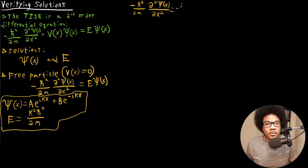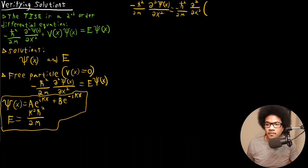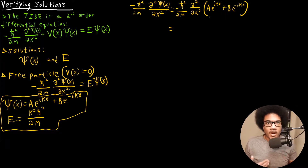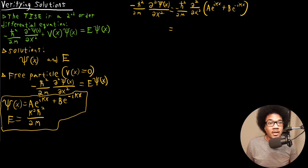Plugging in what we have, we're taking the second derivative of A·e^(ikx) + B·e^(-ikx). Remember that the derivative of e^(dx) is e^(dx), but with these constants out front, those constants come down. So taking the second derivative of both functions, you get (ik)² times A·e^(ikx) plus (-ik)² times B·e^(-ikx).